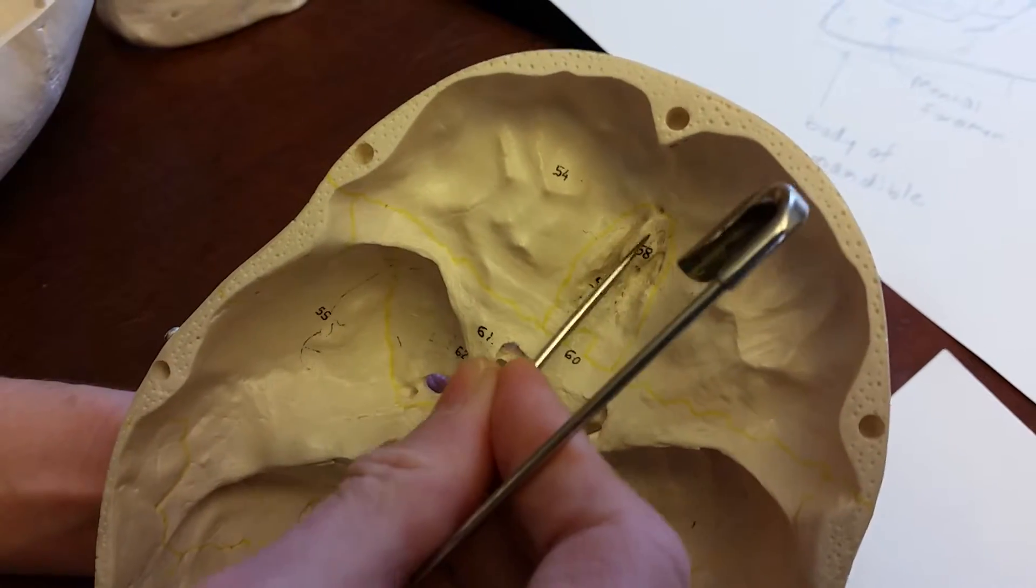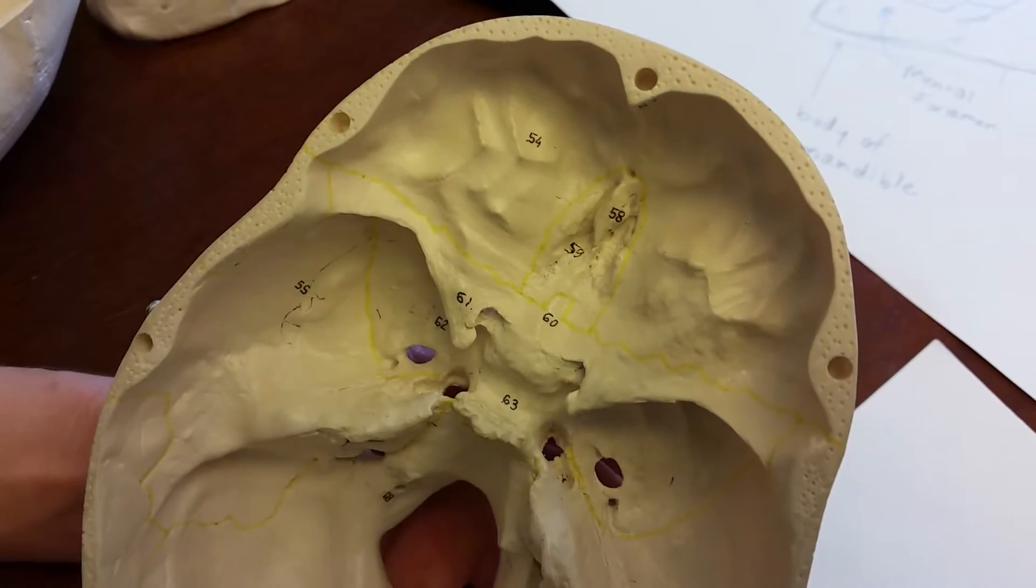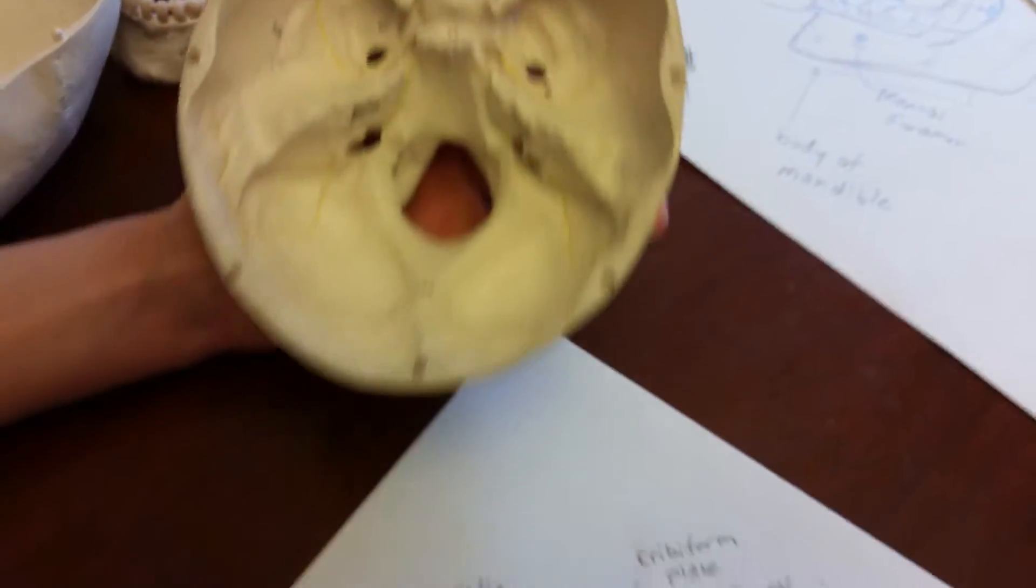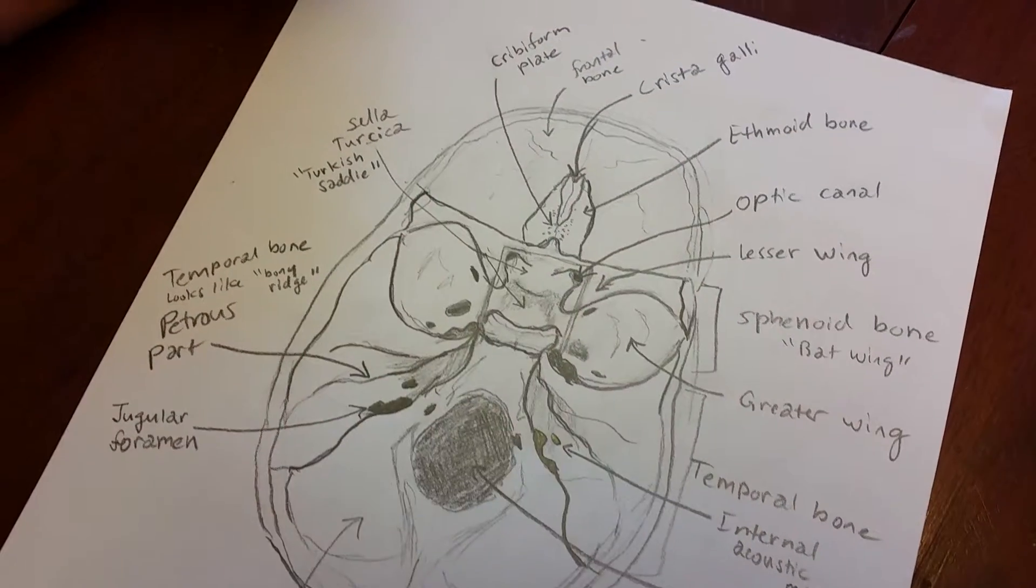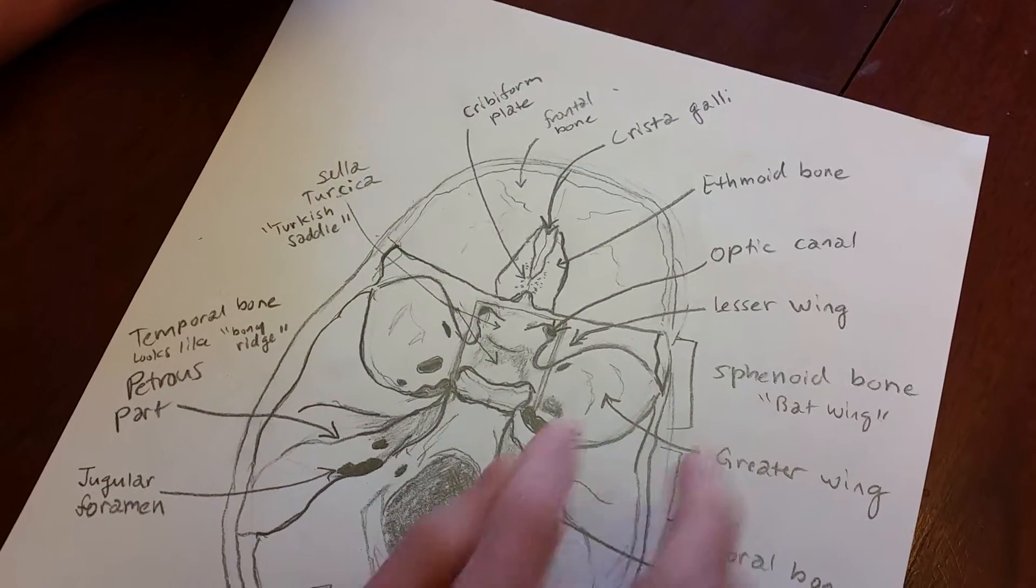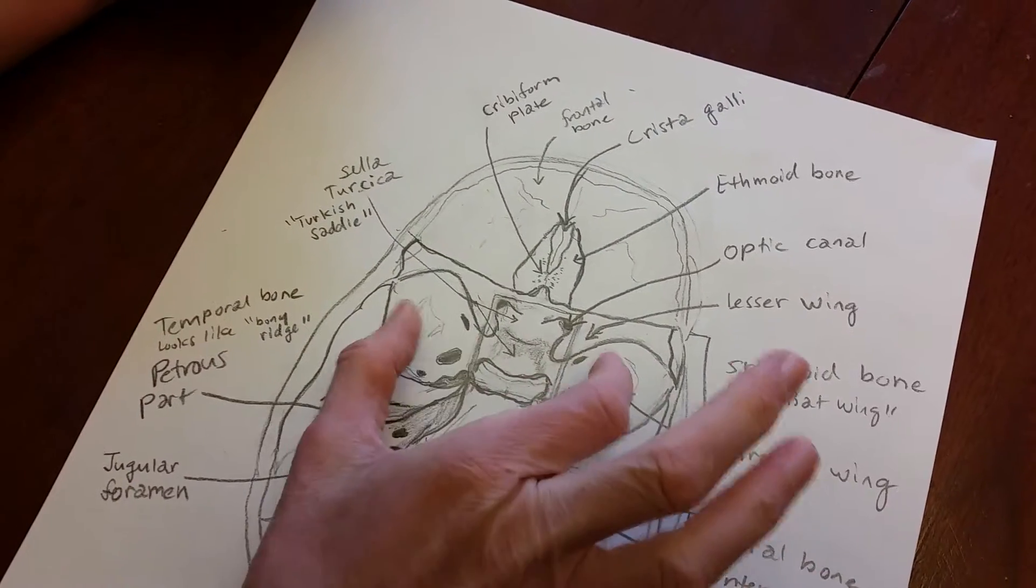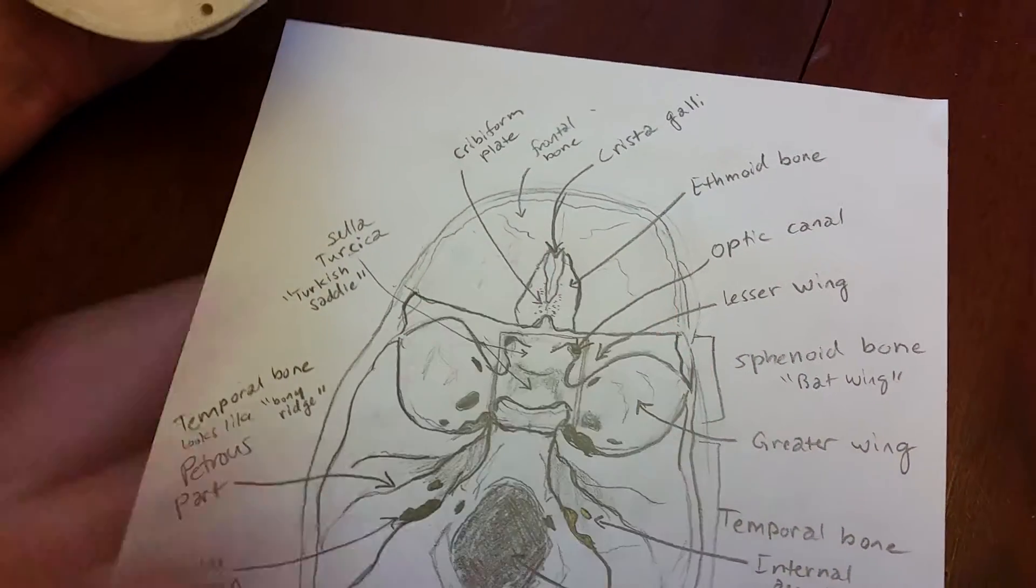This part here, labeled 58 in the model, is called the crista galli. You can see here where I've tried to delineate the borders a little bit darker, of this bone and its features, both the sphenoid bone and the ethmoid bone.